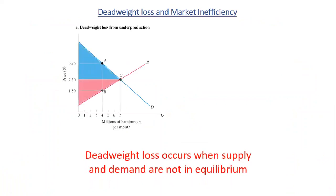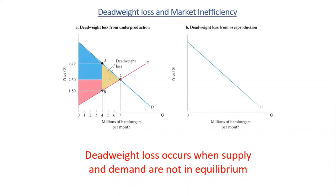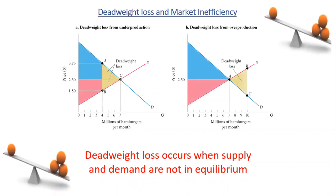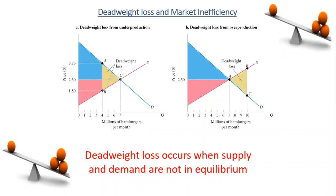Dead weight loss occurs when supply and demand are not in equilibrium, which leads to market inefficiency. Market inefficiency occurs when goods within the market are either overvalued or undervalued. Here we have two cases — the first case is dead weight loss from underproduction.